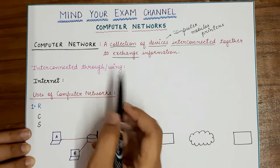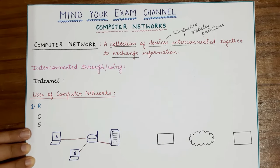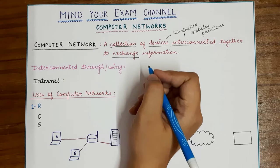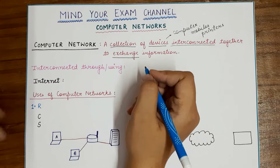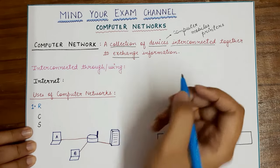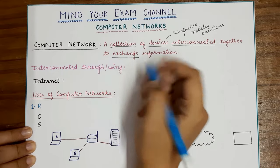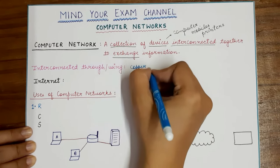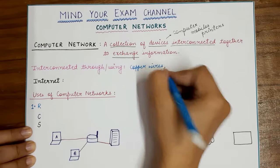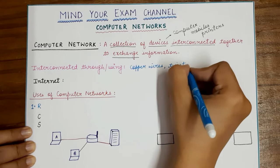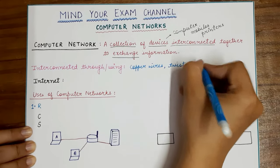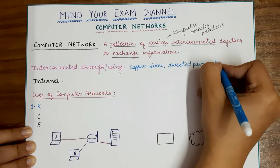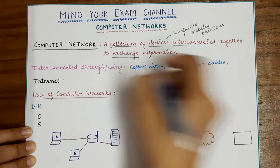This interconnection of devices generally takes place with the help of some communication media or a transmission media. This transmission media can either be a wireless media or a wired media. We will study all of these in detail in this course, but as of now you can say that the devices in a computer network can be connected through wires or wirelessly — communication happening in the form of waves.